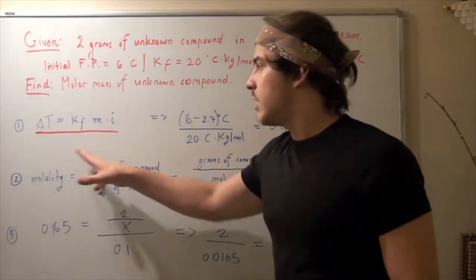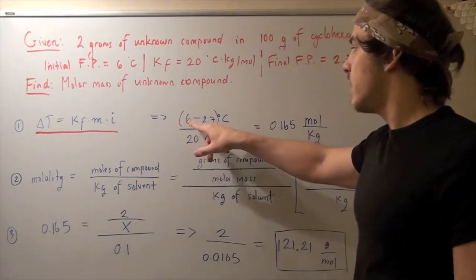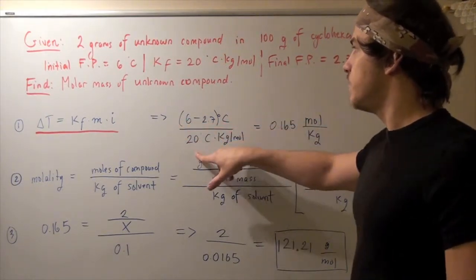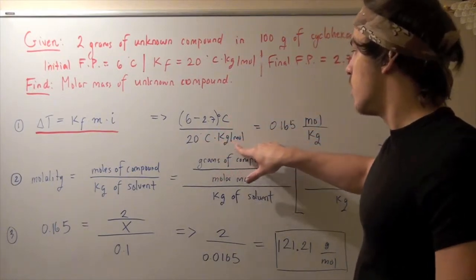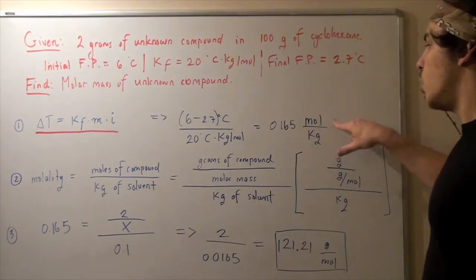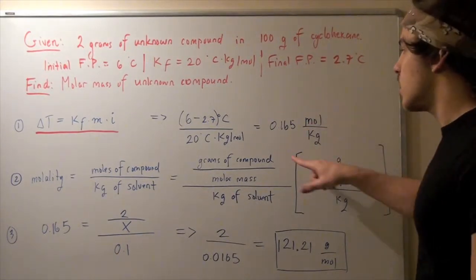So, we plug in our values, and we get 6 minus 2.7 degrees Celsius divided by 20, our constant. Celsius cancels, moles goes on top, and we get 0.165 moles per kg. And this is our molality.